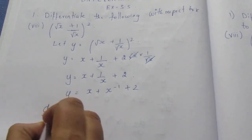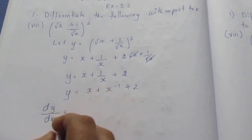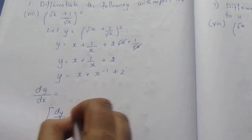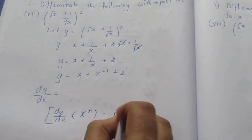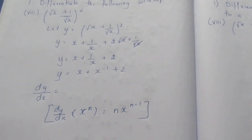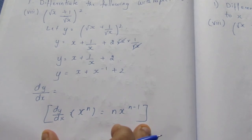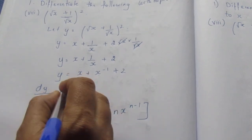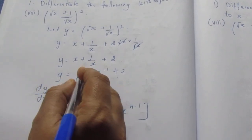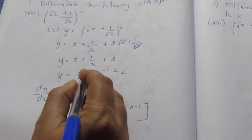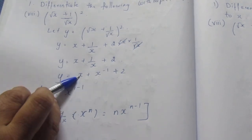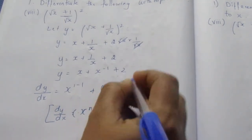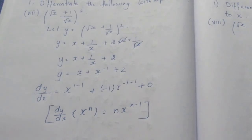dy by dx is equal to: differentiating x gives 1 times x to the power 1 minus 1, which equals 1. Differentiating x power minus 1 gives minus 1 times x power minus 1 minus 1, which is minus x power minus 2. The constant term 2 differentiates to 0.